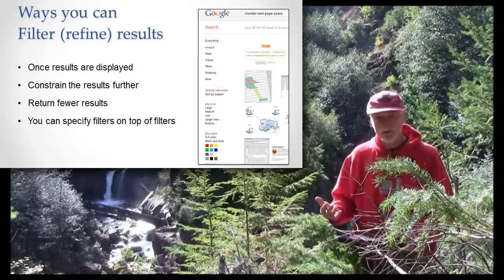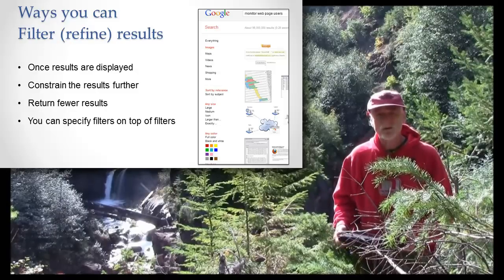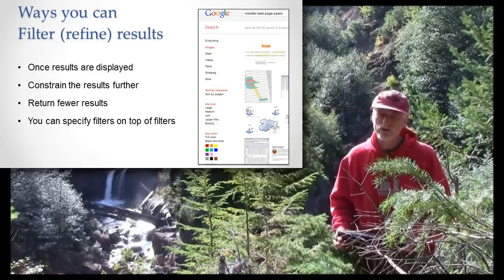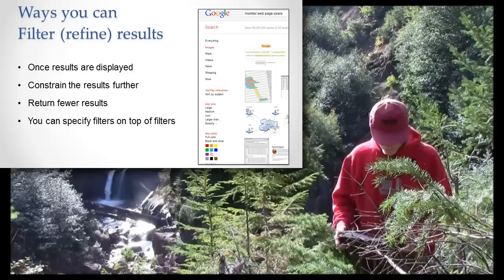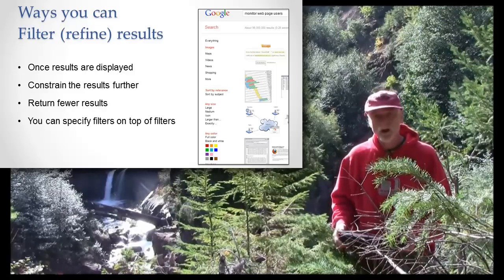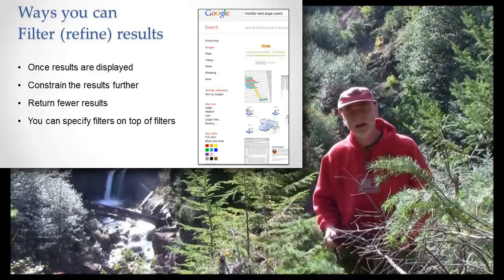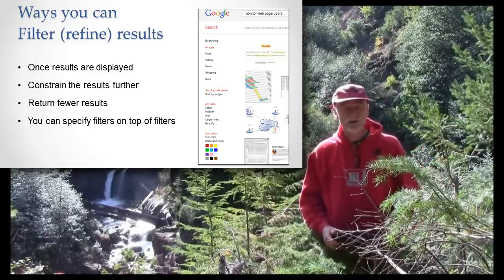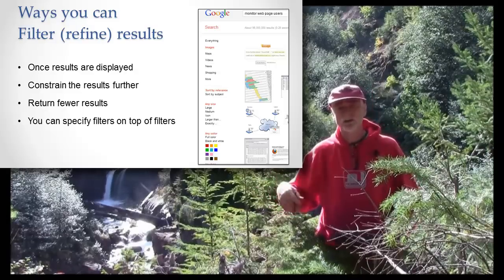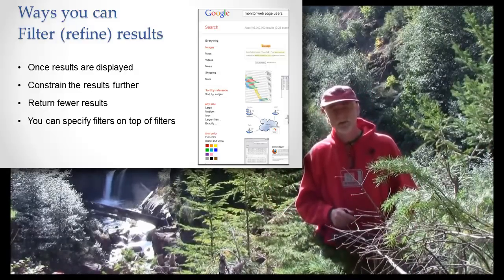In general, this happens once the results are displayed. It allows you to further filter or constrain the results, and the idea is you're going to return fewer results that are more appropriate to you — and it's you who's doing the filtering. Google does filtering too, as shown before; Google further refines the results and gets rid of some results based on things it's doing internally using its own algorithms. These are the kinds of filters that you apply yourselves.